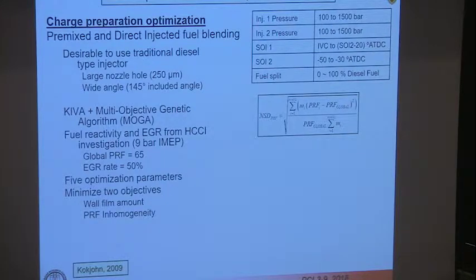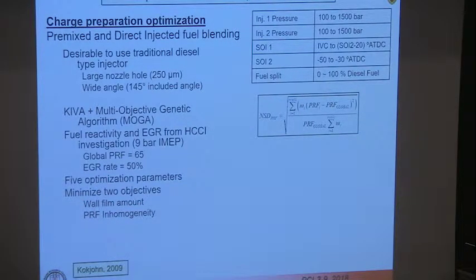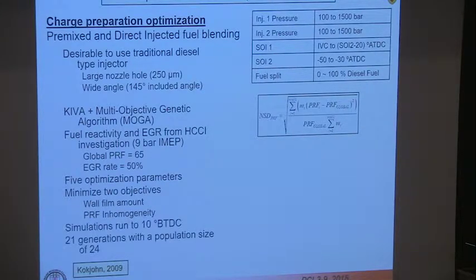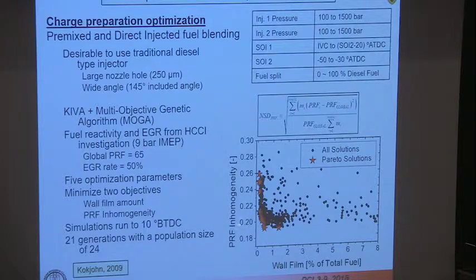We had several objectives without combustion. We wanted to create a blend in the combustion chamber satisfying two constraints: minimize the amount of fuel impinging on combustion chamber surfaces, and keep the PRF number more or less homogeneous across the chamber. We ran 21 generations each with a population of 24. The result shows PRF inhomogeneity versus the amount of wall film fuel, with the stars indicating cases along the Pareto front.